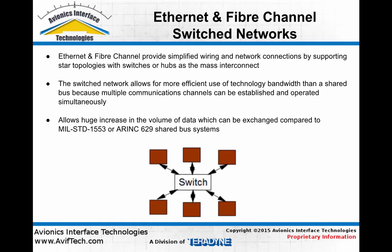With a switch network, individual data paths can be established through the switch between end nodes and therefore multiple pairs of end nodes can communicate simultaneously with each other and take full advantage of the bandwidth allowed on each link between the switch and the end node.